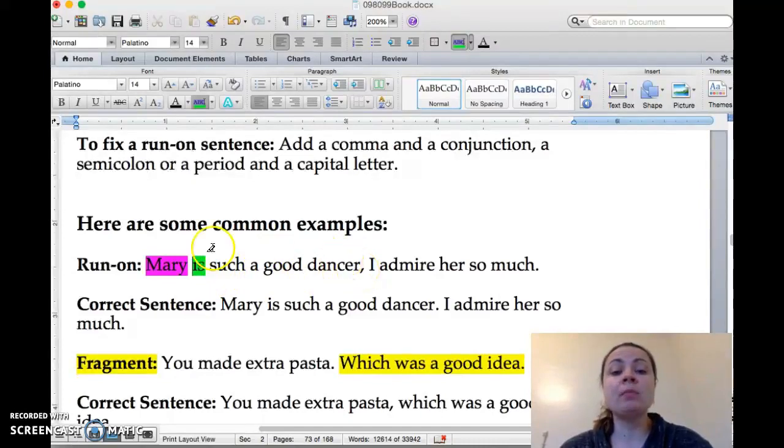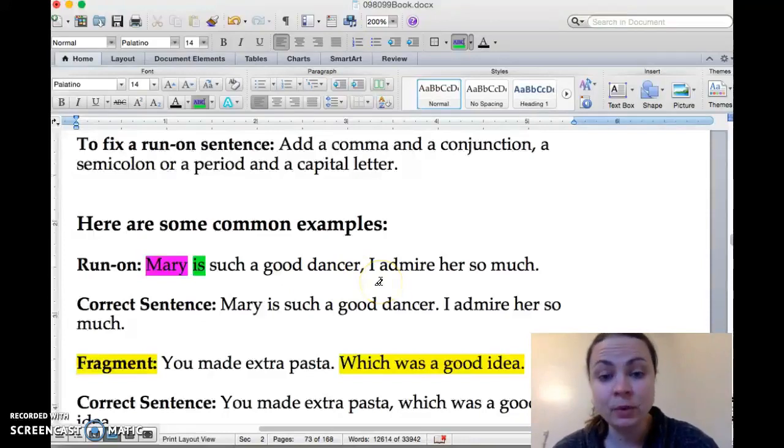That's a complete, a whole CVS. That's a complete thought, verb, and subject that exists there in this sentence. But then what you have is another one. You have another subject, and that is going to be the I. And what's the I being or doing? It's admiring. So I admire her so much.